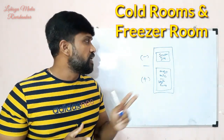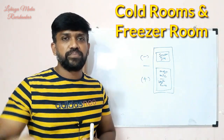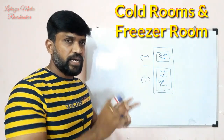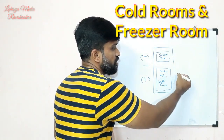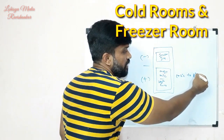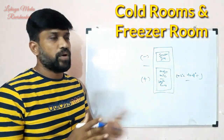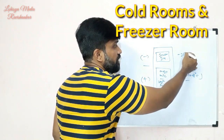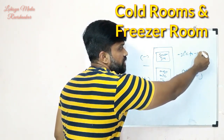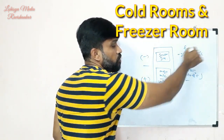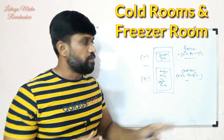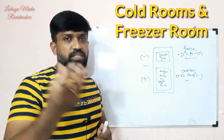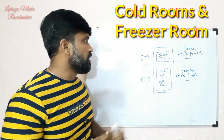WHO has standards and rules for cold rooms and freezer rooms regarding temperature. Freezer rooms are maintained at minus 25 degrees Celsius to minus 15 degrees Celsius. Cold rooms are at positive temperatures — around plus 2 degrees Celsius to plus 8 degrees Celsius. In the freezer, the temperature will be at or below 0 degrees Celsius, which means products will automatically freeze.